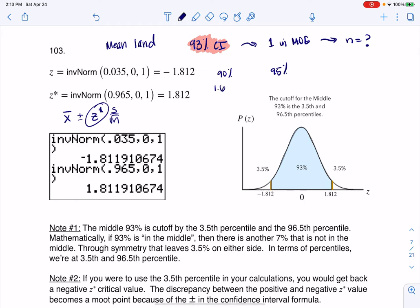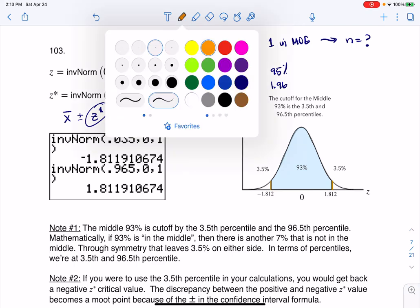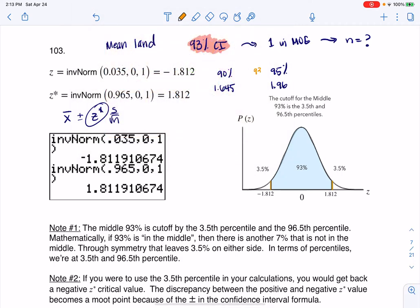We know that the critical value for 90 is 1.645, and we know the one for 95 is 1.96, but what I really want is to figure out what is the 93% critical value.